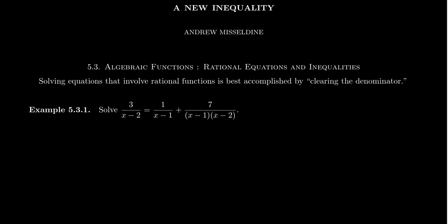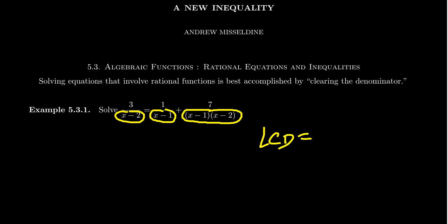To do that, we have to identify the denominators in the equation. We have an x minus 2, an x minus 1, and an x minus 1 times x minus 2. The first thing to do is identify the least common denominator — that is, the least common multiple of all the denominators present.